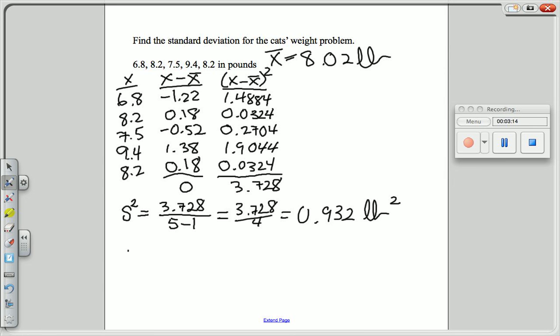Since we actually want to have the square root of all that to get the standard deviation, you actually take the square root of that number we just found, which gives us 0.965 and the units are pounds just like the original data.